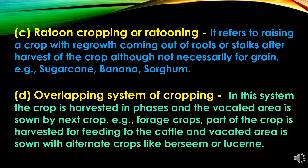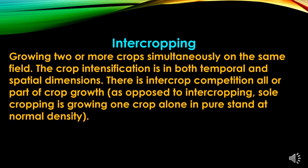The fourth type of multiple cropping is the overlapping system of cropping. In this system the crop is harvested in phases and the vacated area is sown with the next crop, like forage crops — part of the crop is harvested for feeding to the cattle and the vacated area is sown with alternate crops like berseem or lucerne. Now we'll go through intercropping.